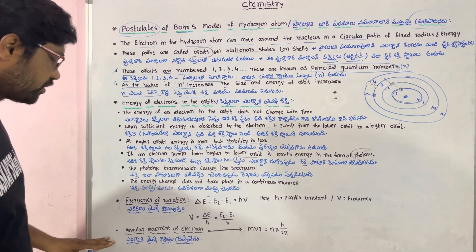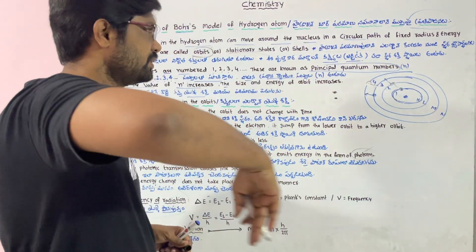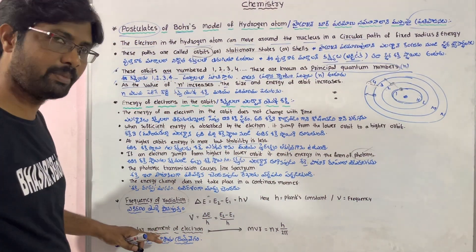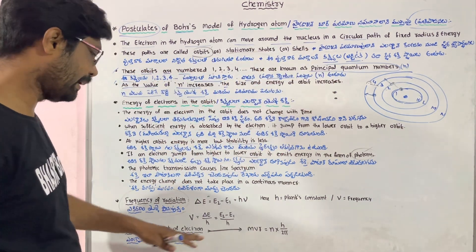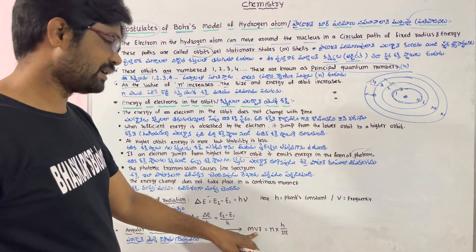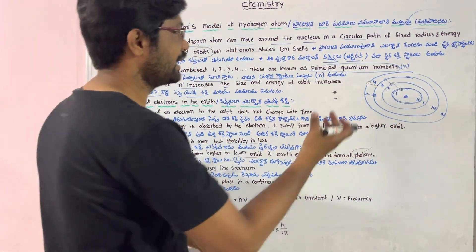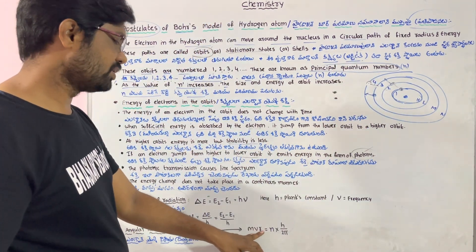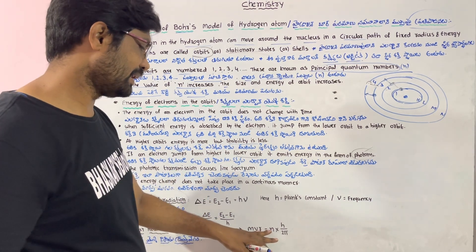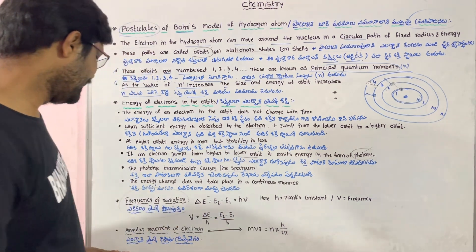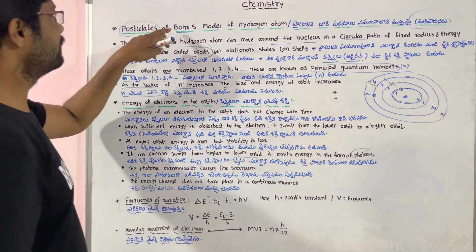The fourth postulate is about the angular momentum of the electron. The electron moves around the nucleus in a circular orbit, and its angular momentum is quantized. The formula is mvr = nh/2π, where m is the mass of the electron, v is the velocity, r is the radius, n is the principal quantum number, and h is Planck's constant. This is Bohr's model of the hydrogen atom.